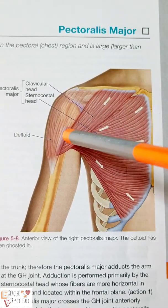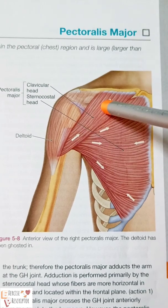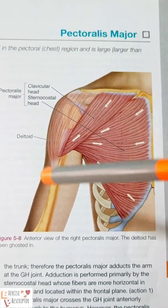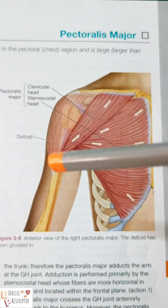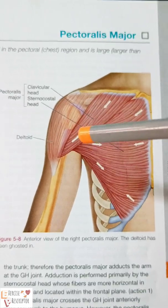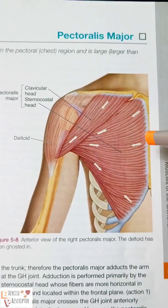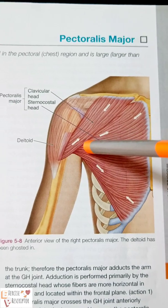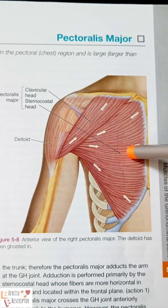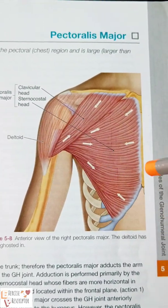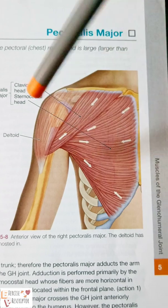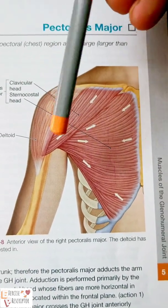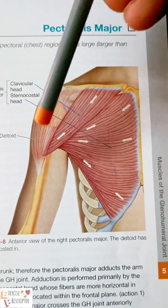If the proximal fibers pull the humerus, it creates the movement of flexion — the humerus moves forward, producing flexion of the shoulder joint. If the middle fibers run in a horizontal manner and pull the humerus, it creates adduction of the shoulder joint and also medial rotation of the humerus at the shoulder joint.